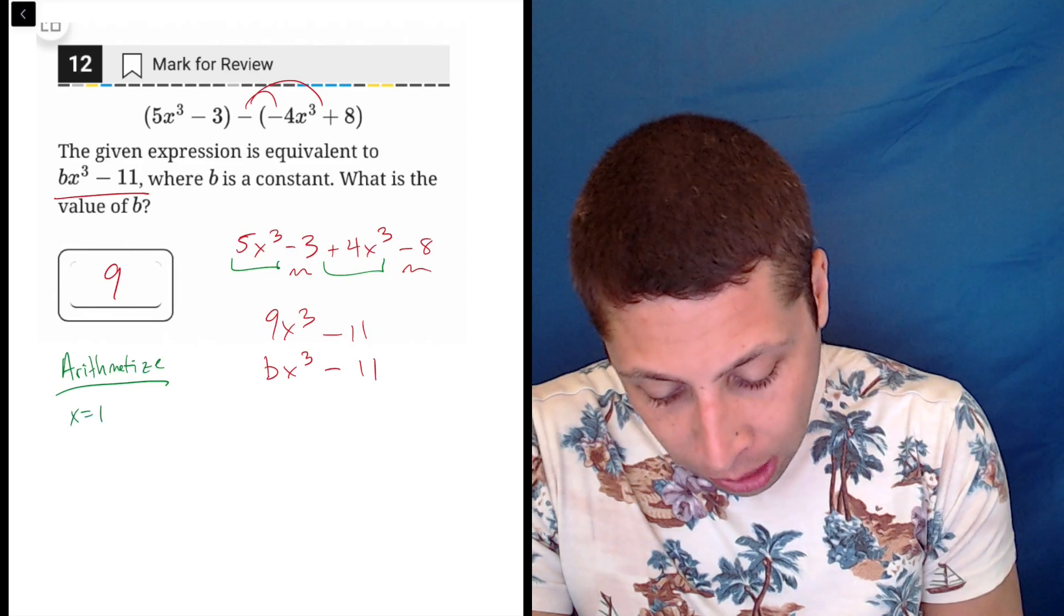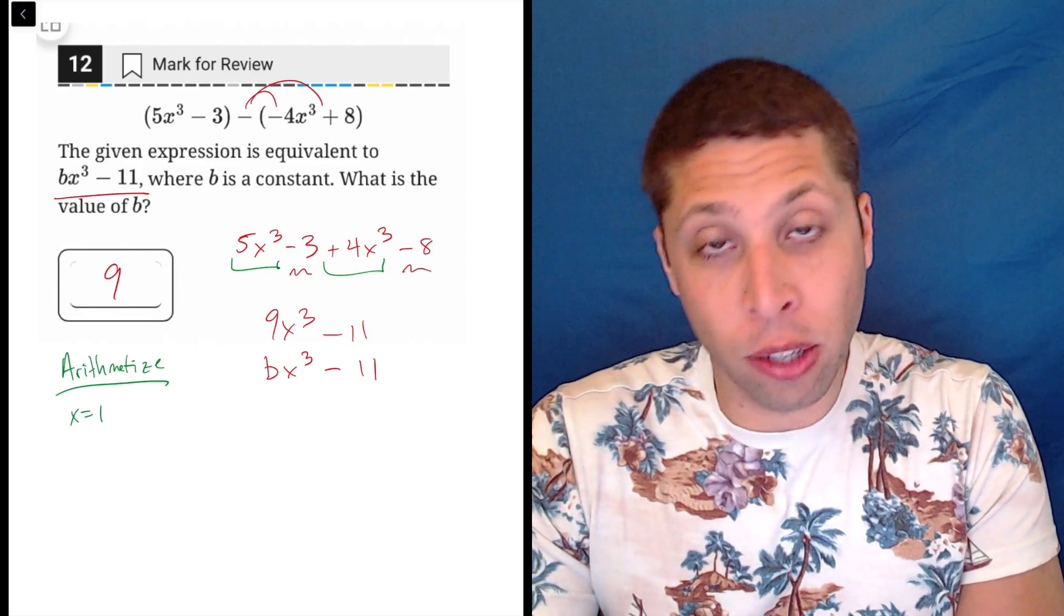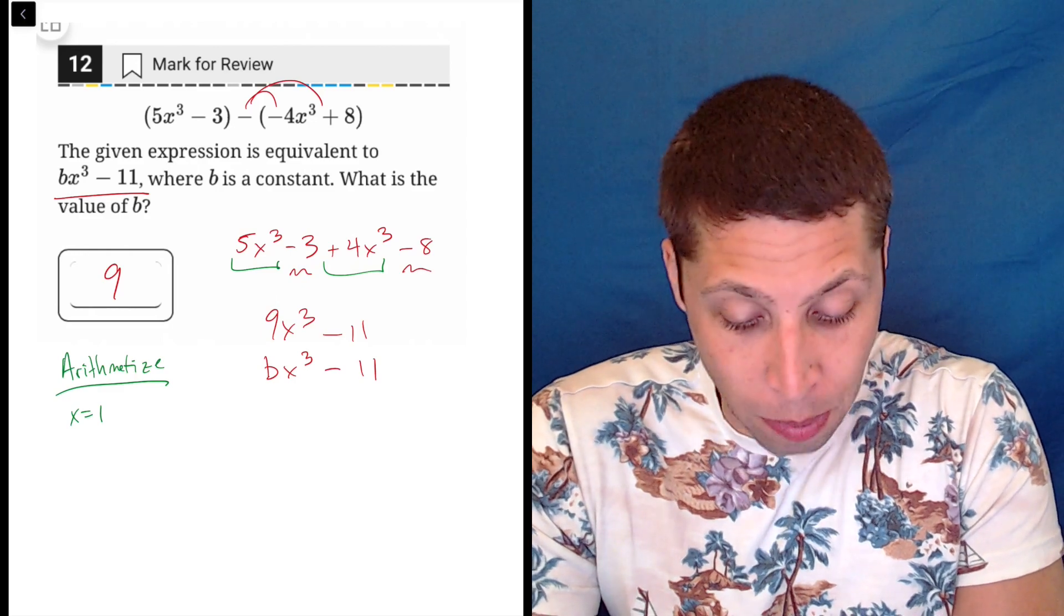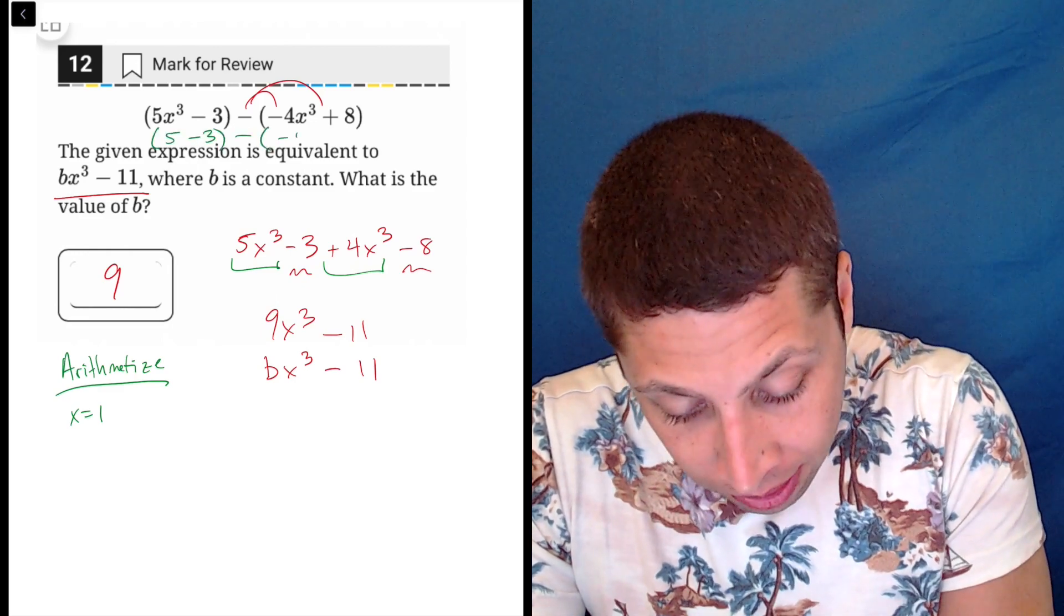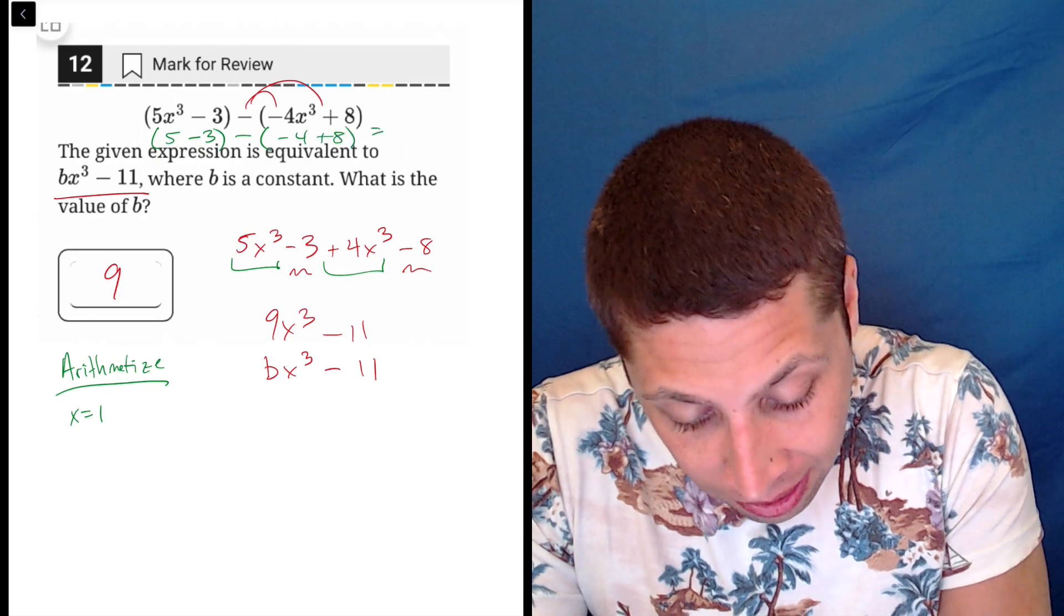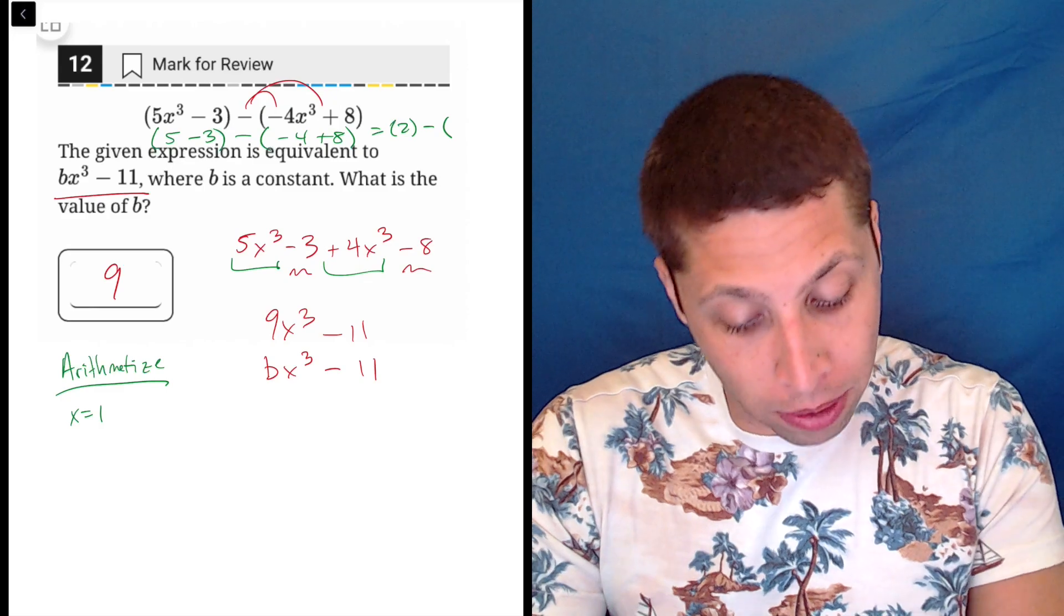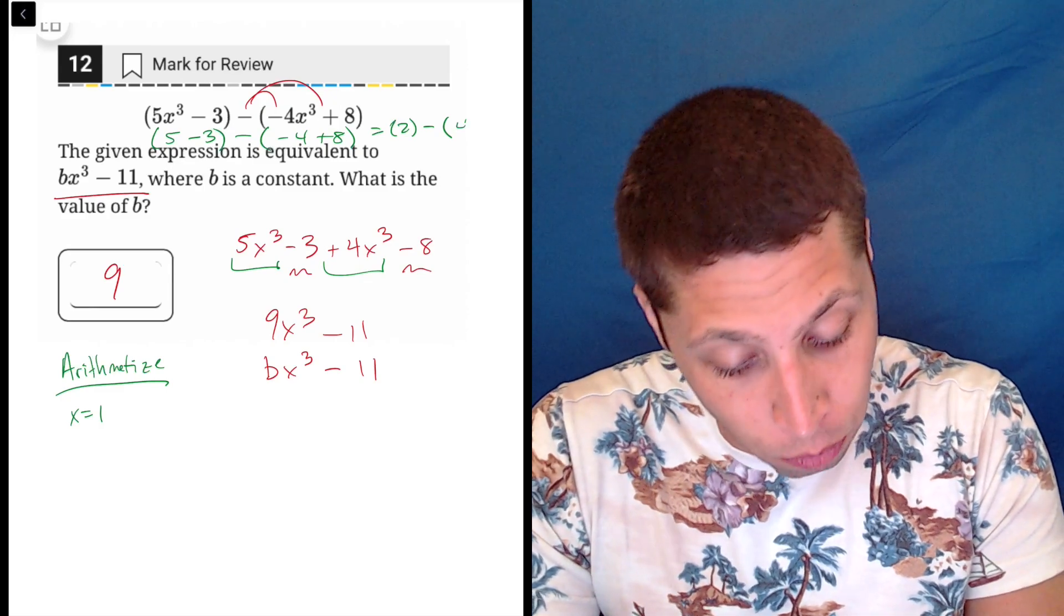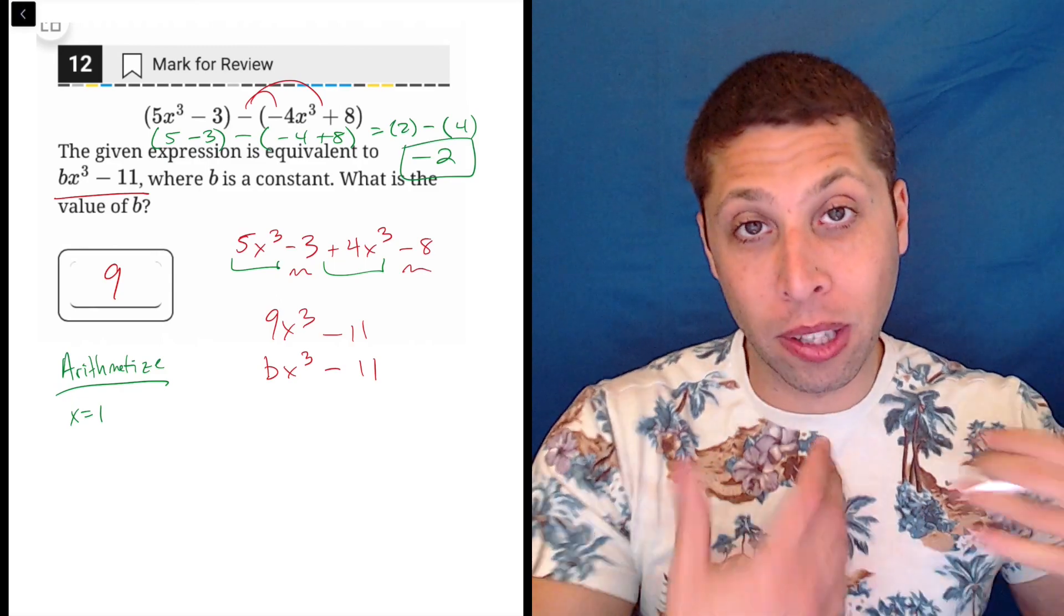we could just make x equal to 1. And then this original expression becomes really easy, right? Because 1 cubed is just 1. So basically, the x's don't matter anymore. This is 5 minus 3 minus negative 4 plus 8. So 5 minus 3 is 2. Negative 4 plus 8 is 8 minus 4 is 4. So 2 minus 4 is negative 2. So that's kind of like what this is equal to.